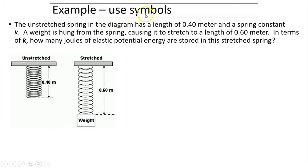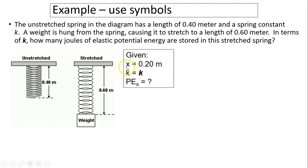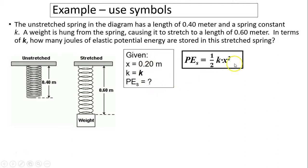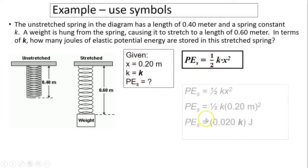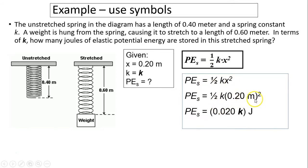Another example using symbols: An unstretched spring has a length of 0.4 meters and a spring constant of k. A weight hung from the spring causes it to stretch to 0.6 meters. In terms of k, how many joules of elastic potential energy are stored? x equals 0.2 meters (0.6 minus 0.4). Using PEs equals one half k x squared: PEs equals one half times k times 0.2 squared, which gives 0.02k joules.